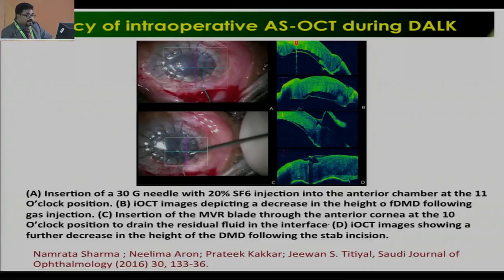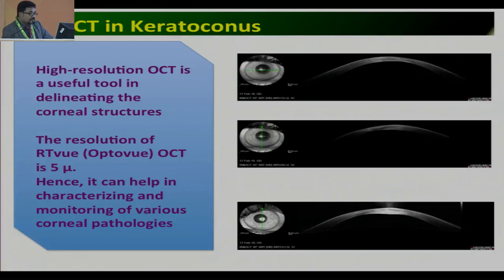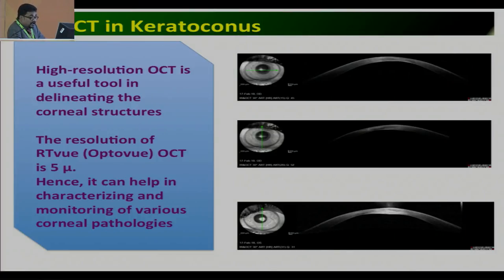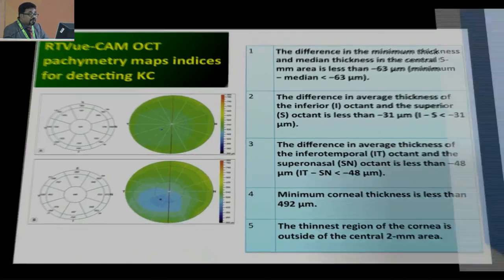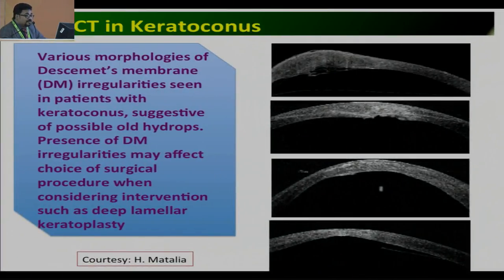Similarly, intraoperative SOCT during DALK can be used to assess residual stromal bed thickness and detect any retained posterior stroma. In SOCT and keratoconus, high resolution SOCT is a useful tool in delineating corneal structures. The resolution of RT-View OCT is 5 microns, hence it can help in characterizing and monitoring various corneal pathologies. In keratoconus, various morphologies of Descemet's membrane can be assessed to guide whether the patient needs DALK or PK based on Descemet's regularity.